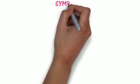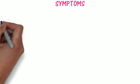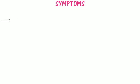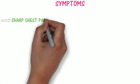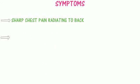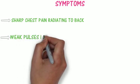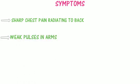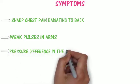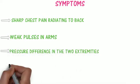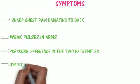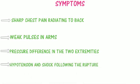Now let's look at the symptoms. The main symptom of aortic dissection is sharp chest pain that radiates to the back. There may also be weak pulses in downstream arteries like the brachial artery, or a difference in blood pressure between the two arms. If rupture occurs, massive hypotension and even shock may develop, which can be a potentially fatal complication.